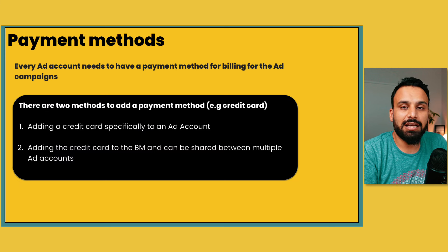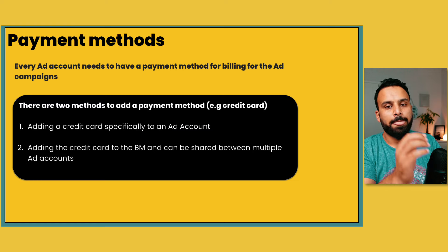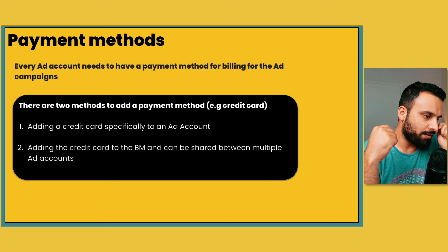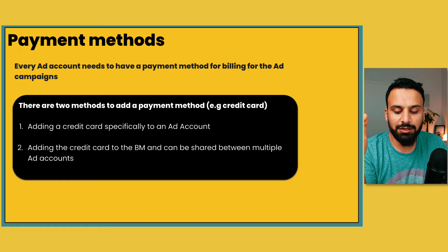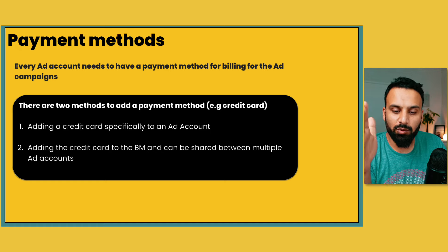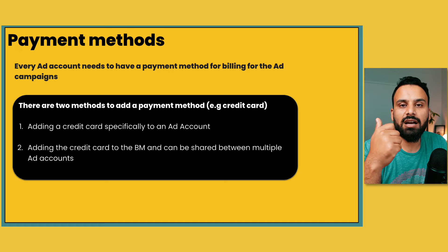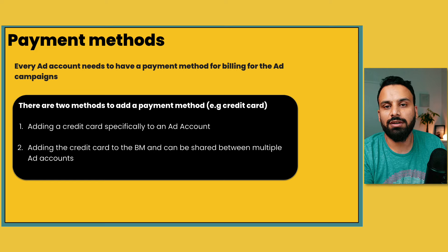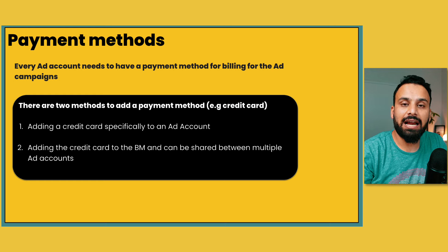Now the first thing we'll learn is adding payment methods. There are two ways to add them — one important thing to remember is that payment methods are added to each ad account. Every ad account has a payment method. So if you have two clients with two ad accounts, you can have separate payment methods — one credit or debit card per client's ad account.